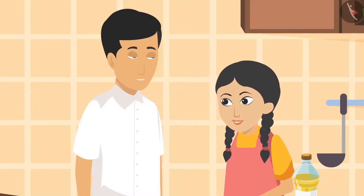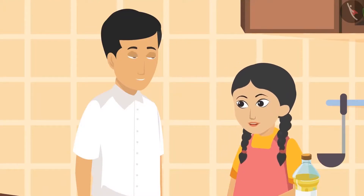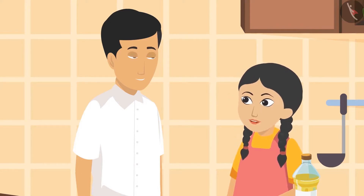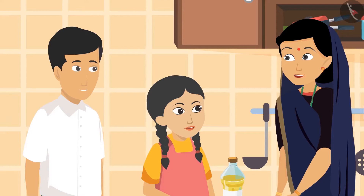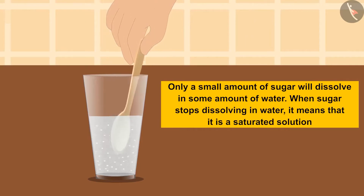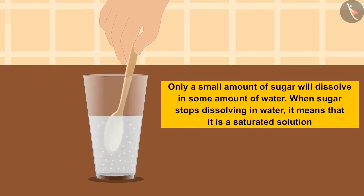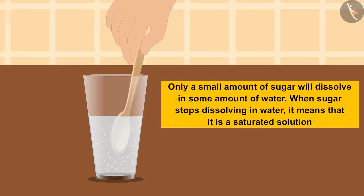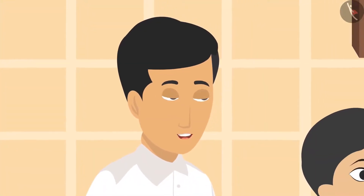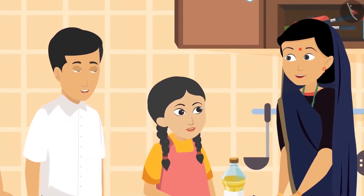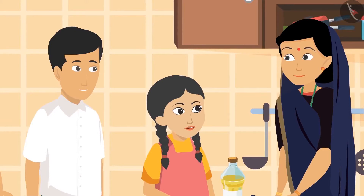Hey, the remaining sugar dissolved! But why was the sugar not dissolving in less water? Mother heard all this and came to Rhea and Sahil. Because the solution was a saturated solution. Saturated solution means? Only a certain amount of sugar will dissolve in a given amount of water. When sugar stops dissolving in water, it means that it is a saturated solution. Mother, now my mind has also become saturated and the stomach is empty. Everyone starts laughing and gets ready to eat.